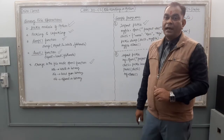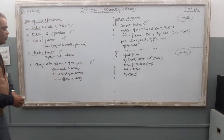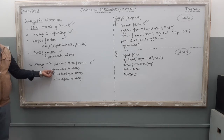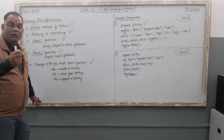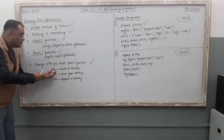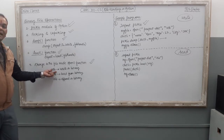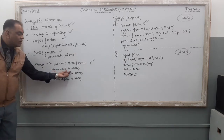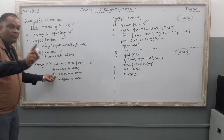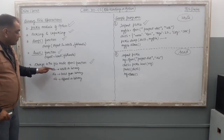For a binary file, the modes are different. In text file operation you use 'w' to write, but in binary file operation you use 'wb' — both in small letters. 'wb' means write in binary, 'rb' means read from binary, 'ab' means append in binary. The letter 'b' is added to each mode for binary file operations.